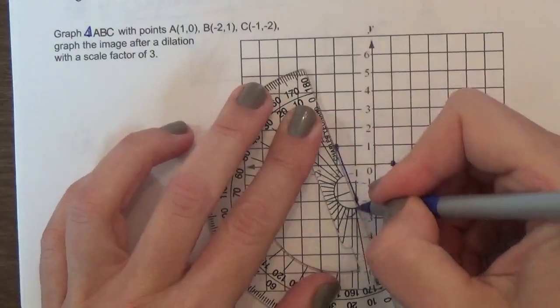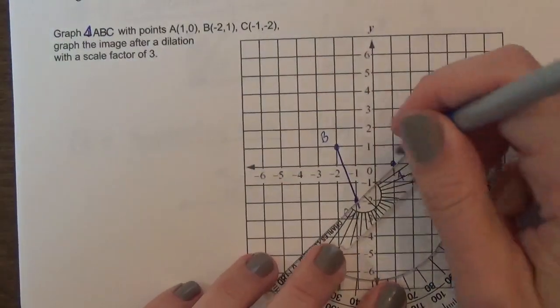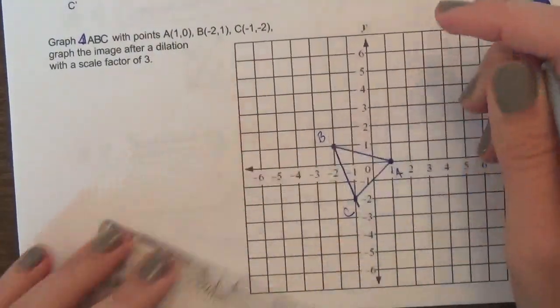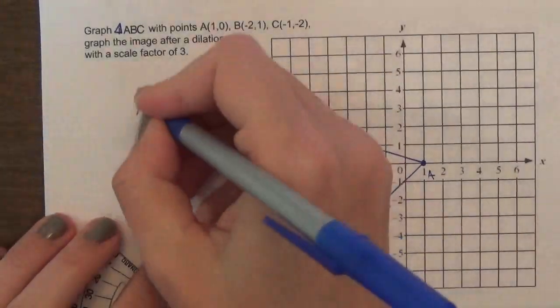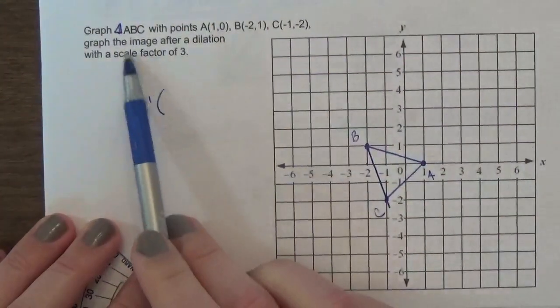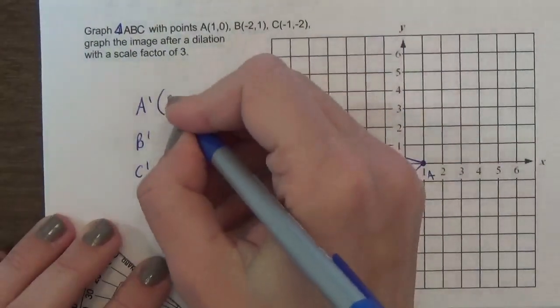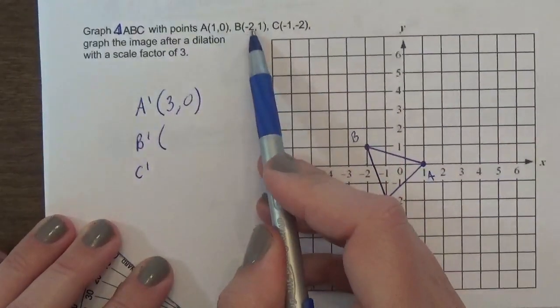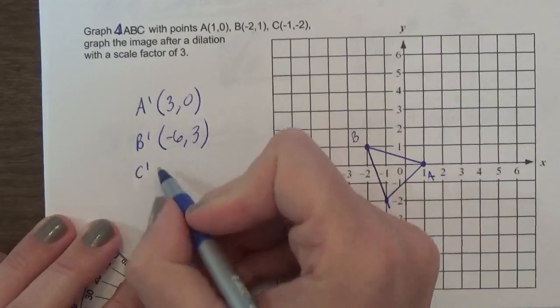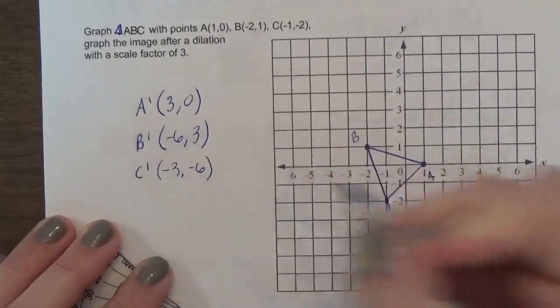I'm not going to try to do it in my head. I'm going to write down the points so I don't make a mistake. If we're doing a scale factor of 3, A prime would be 3, 0. B prime would be negative 6, 3, because times 3. And C prime would be negative 3 and negative 6.